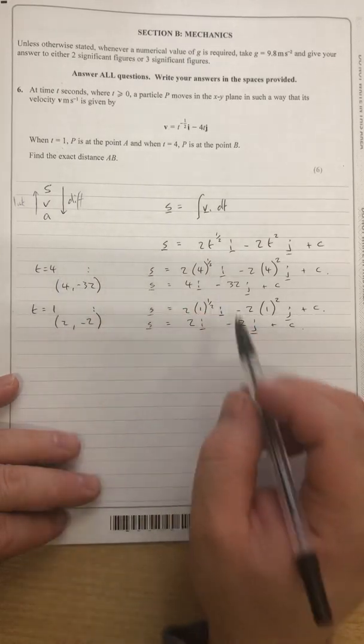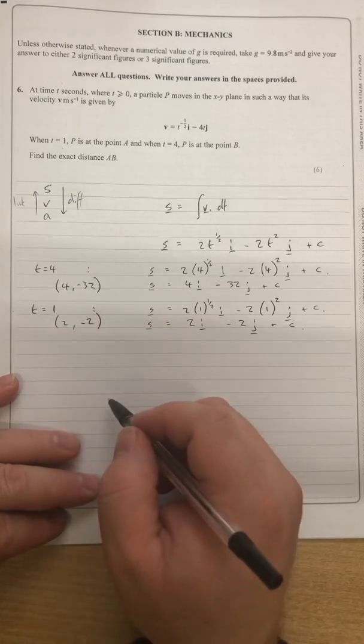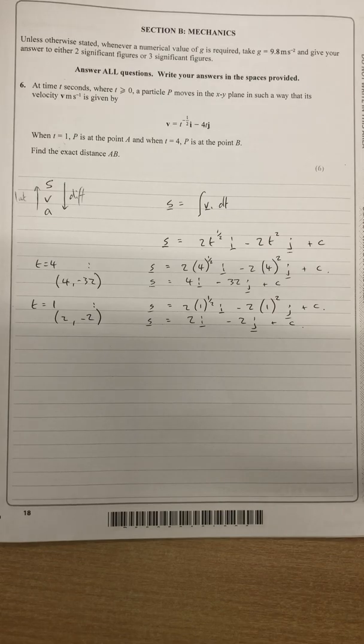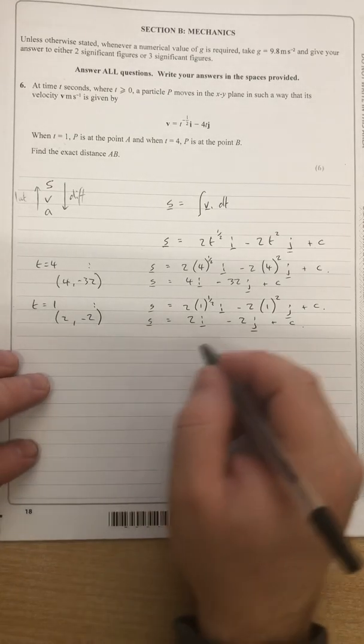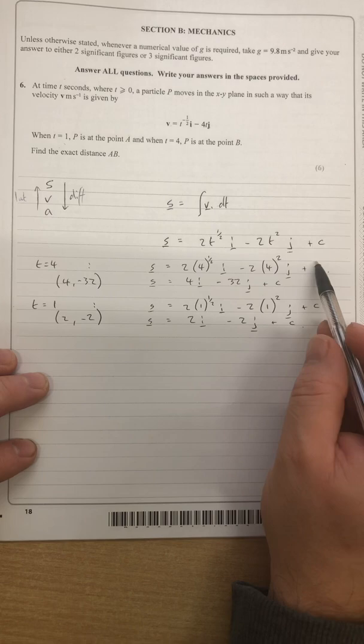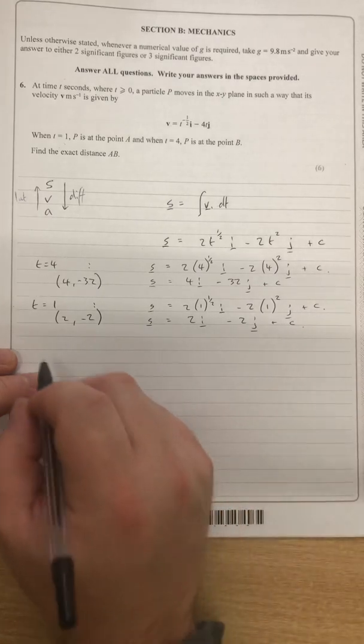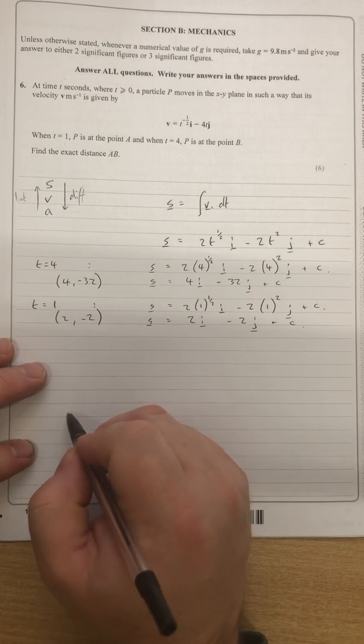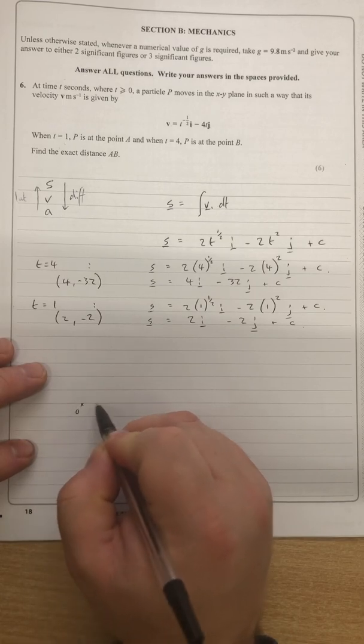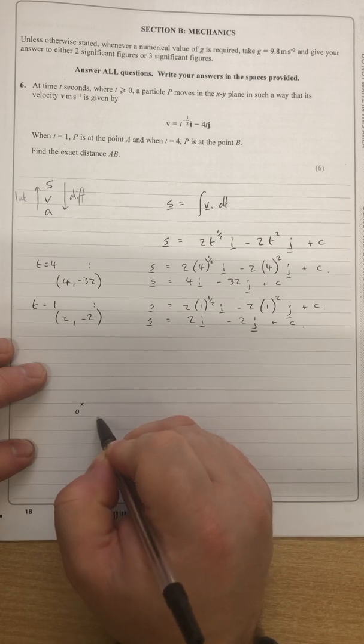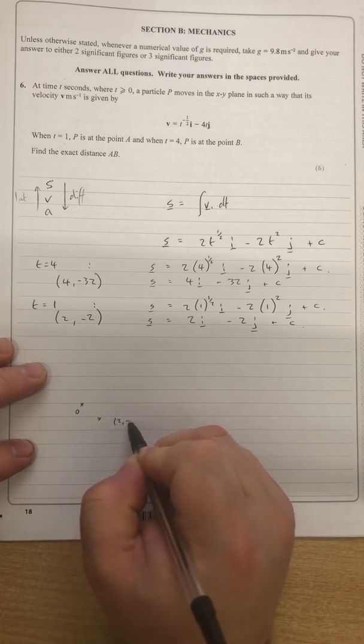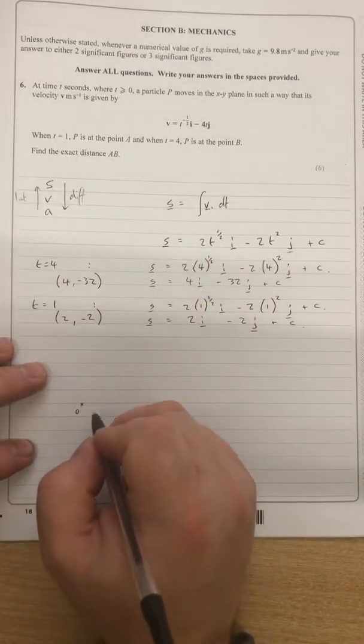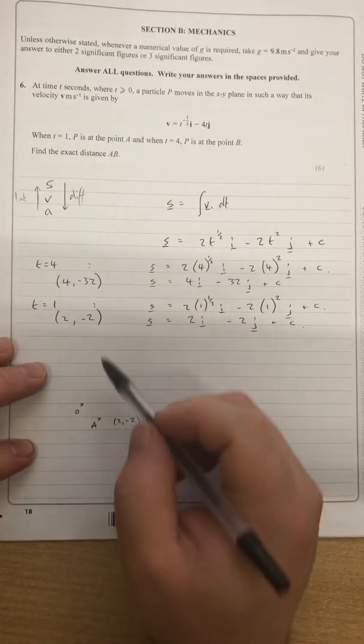So you could map that out if it helps you think about it. The c's are going to cancel because you're going to do one take away the other, so they would go. Let's have a look at this though, so 2 along, that's my origin, I've got 2 along 2 down, so I'm going to just sort of assume that's somewhere like that, 2 along and minus 2. That was when t is 1, that was point a, wouldn't it, so that would be point a.